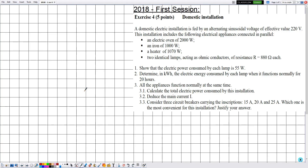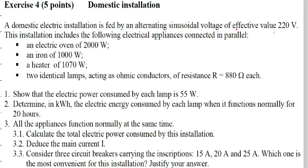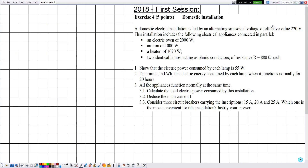Hello everyone. In this new video we are going to solve an exercise related to electricity, covering the chapters of resistors, electric power and energy, AC voltage, and the voltage of the mains. This exercise was from the 2018 first session exams, exercise number four. The title is 'Domestic Installation.' A domestic installation is fed by an alternating sinusoidal voltage of effective value U equal to 220 volts.